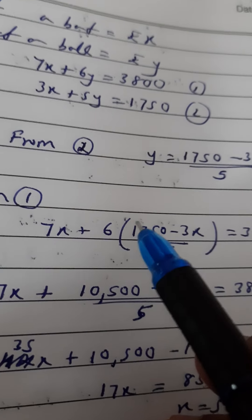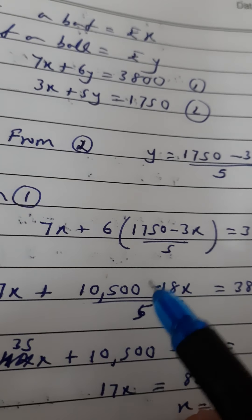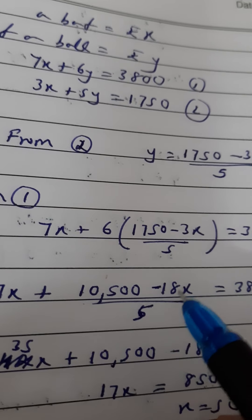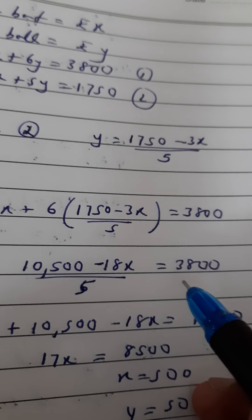Now I will open the bracket: 7x plus, when you open this you get 10,500 minus 18x, all divided by 5, equals 3800.